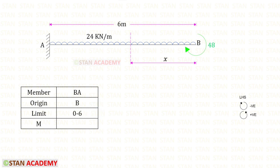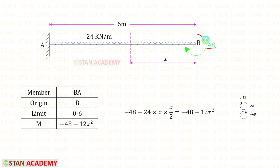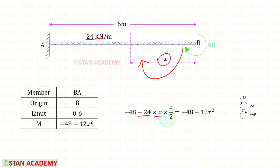Now we find the moment M from point B following the left-hand side rule: clockwise is negative and anti-clockwise is positive. The moment M acts clockwise, so it is negative. The UDL of 24 also acts clockwise, so it is also negative. With the UDL we multiply the distance and then the distance by 2: 24 divided by 2 gives 12, and x times x gives x squared, so M equals minus MB minus 12x squared.